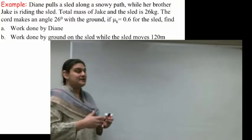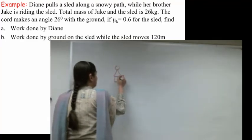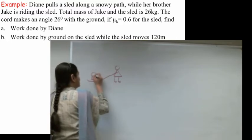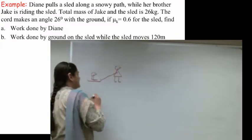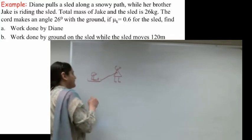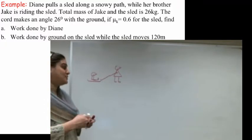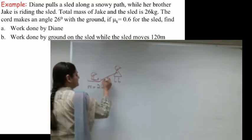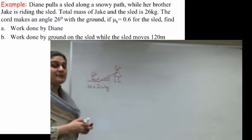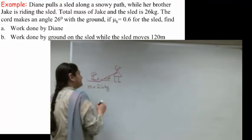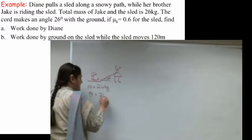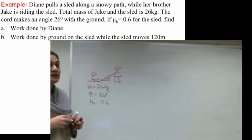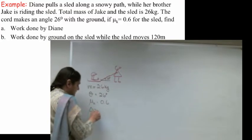As always, we will start with drawing a picture. So I'm going to draw Diane, and she's holding on to a rope that her brother is sitting on. So here's her sled, here's her brother. He's sitting on a sled, and she's dragging him around. They're both happy, and they're both driving down the street. It says that the total mass of Jake and the sled is 26 kilograms. So I'm just going to call it m, which is equal to 26 kilograms. It says that the cord makes an angle of 26 degrees with the ground. Theta equals 26 degrees. If mu k equals 0.6 for the sled, and delta x is 120 meters.